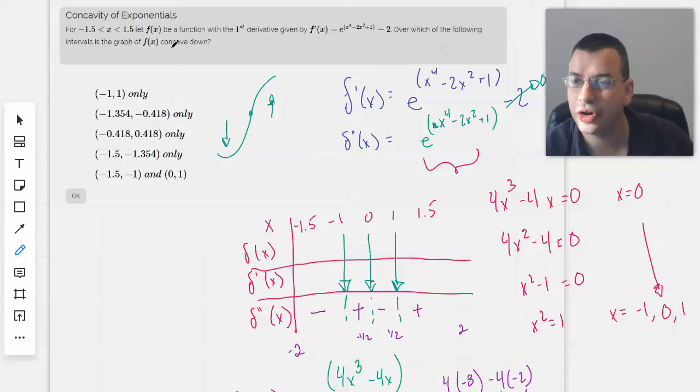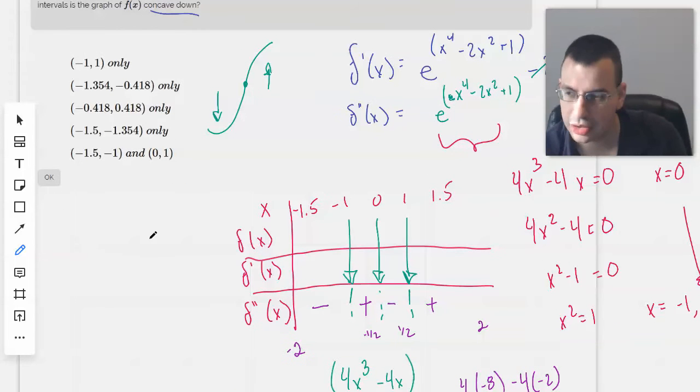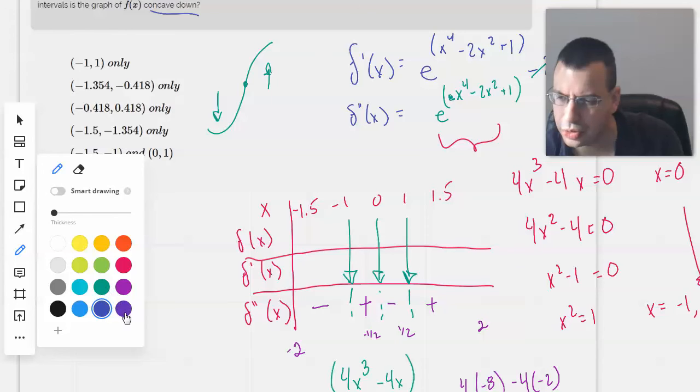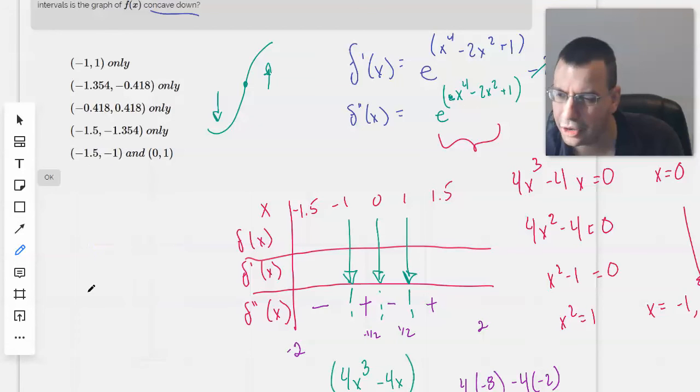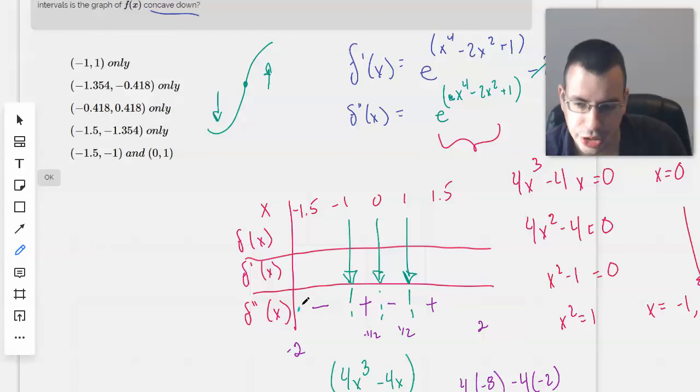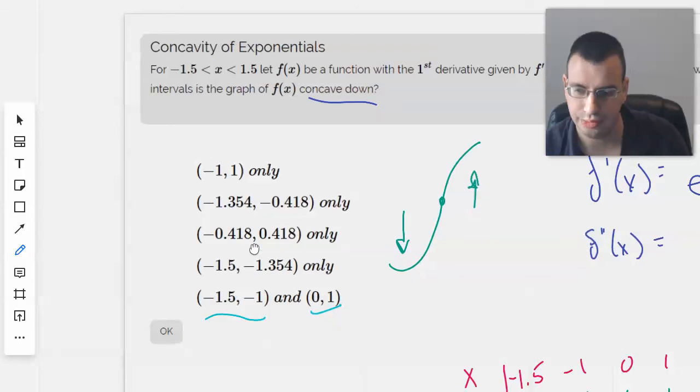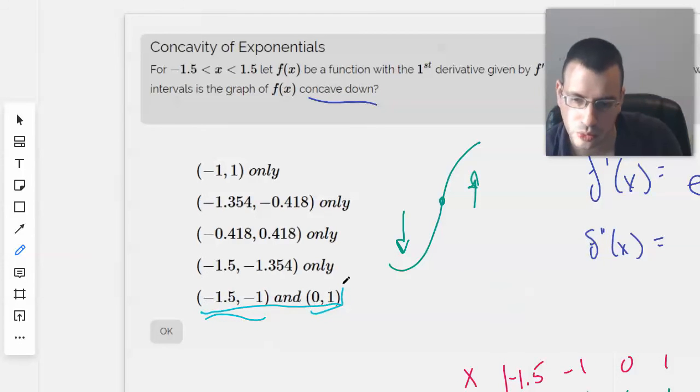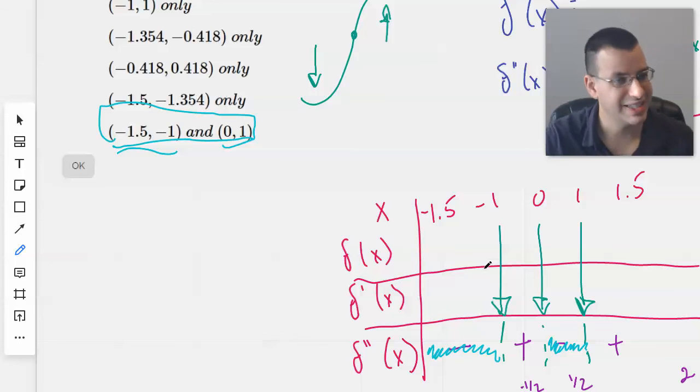Which region is concave down? This region - from -1.5 to -1, and then from 0 to 1. So this will be our answer: (-1.5, -1) and (0, 1), where we're concave down, i.e., the concavity is negative.